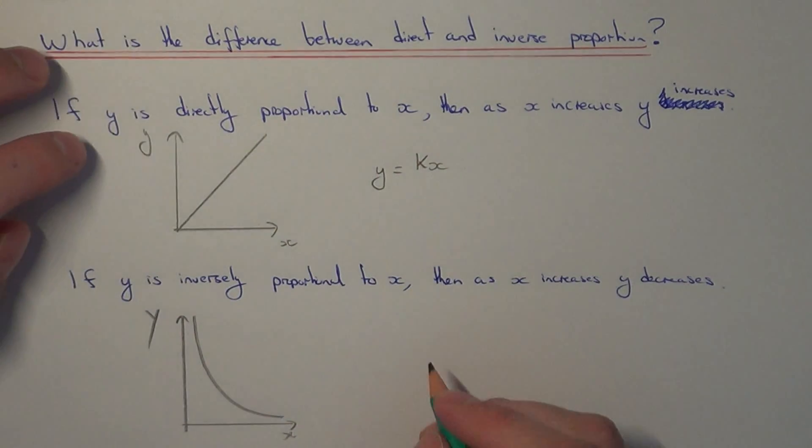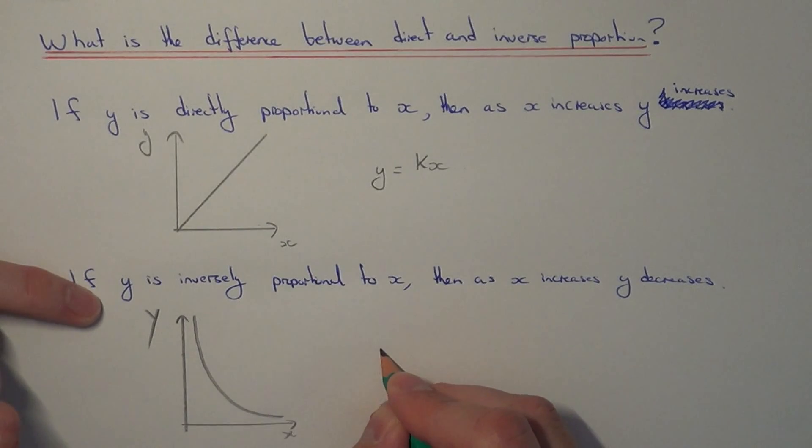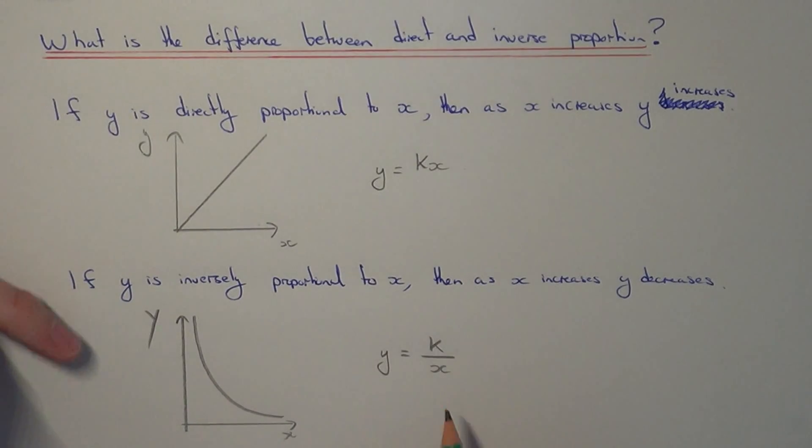So the formula for this type of graph will be in the form of y equals k divided by x. Again, k is a constant of proportionality, which you need to find. Thanks for watching.